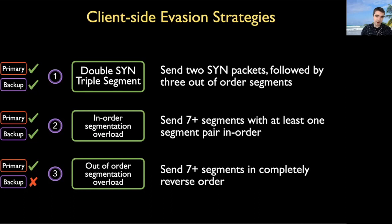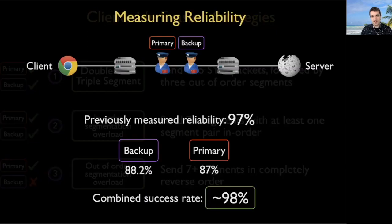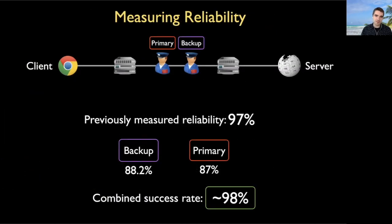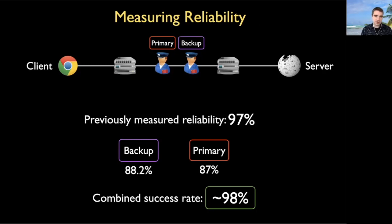Now that we have the ability to disable the primary middlebox and study the backup in isolation, we can start learning more about how the backup works. One of the first things we did was test the reliability of the primary and backup middleboxes. Researchers had previously measured the reliability of the SNI censorship middleboxes at about 97 to 98%. We generated a large number of test connections targeted toward each middlebox in isolation. What we found was that individually the reliabilities were lower, but the composition of their success rates very closely matched the previously measured values. This suggests that this value we've been measuring in the past is not just one middlebox, but multiple running quietly in concert.